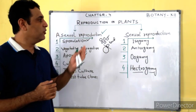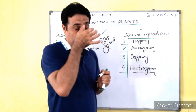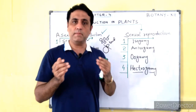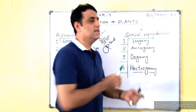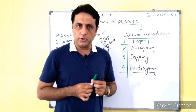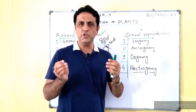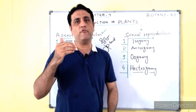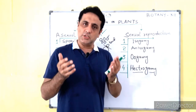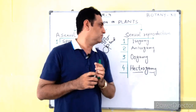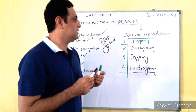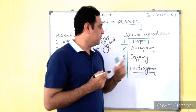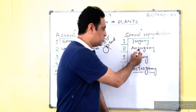Now we come to sexual reproduction. The fusion of male and female gametes is known as sexual reproduction — a process in which male and female gametes fuse together and form a zygote. This is called sexual reproduction. In sexual reproduction there are four kinds: isogamy, anisogamy, oogamy, and heterogamy.